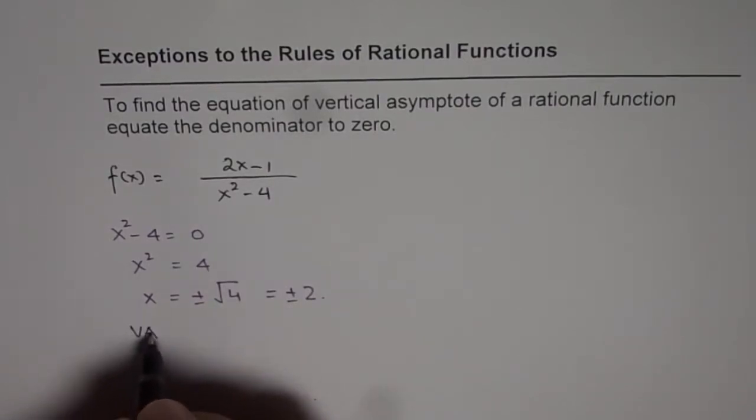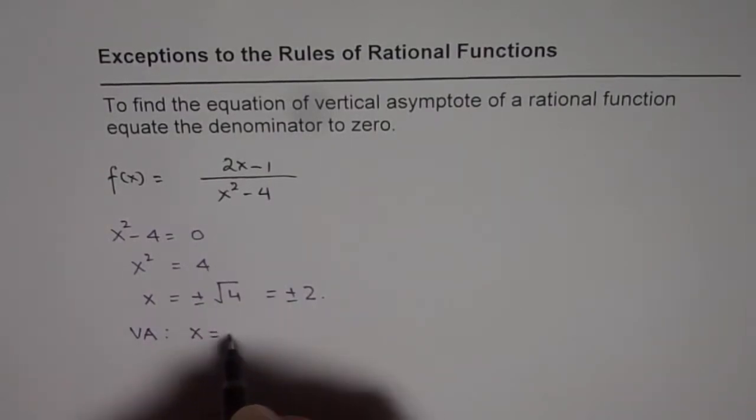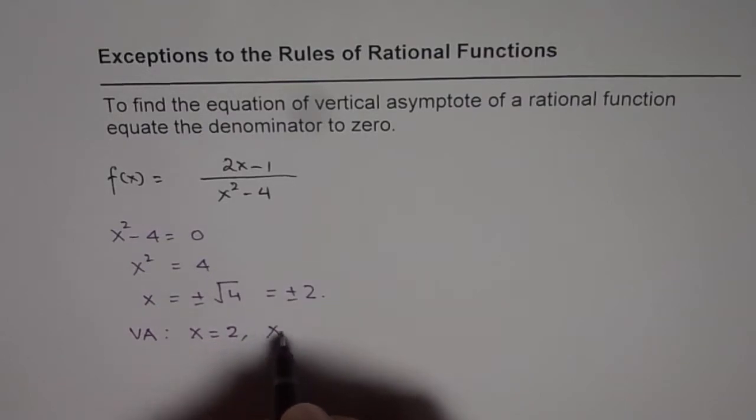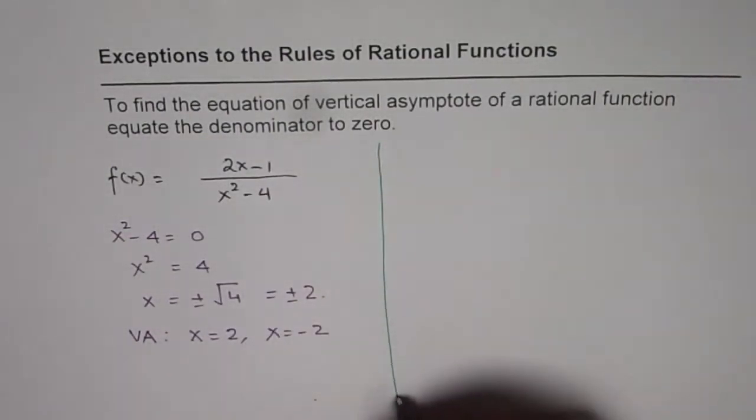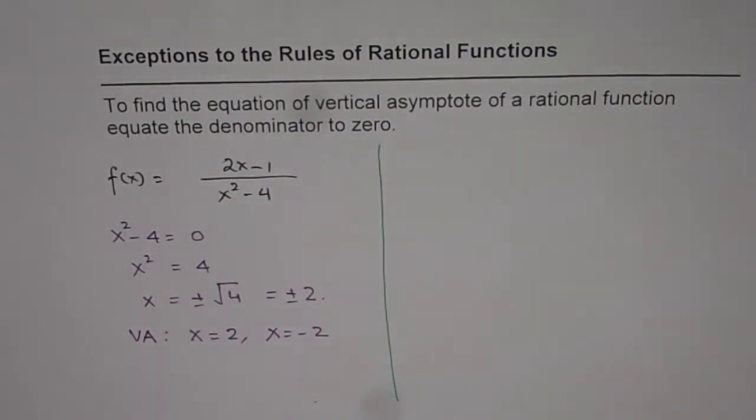And so, we say vertical asymptote will be at x equals 2 or at x equals minus 2. So, this equation of rational function will have two vertical asymptotes. Now, let us consider another example, which is of similar kind.